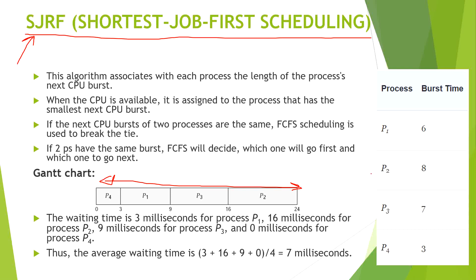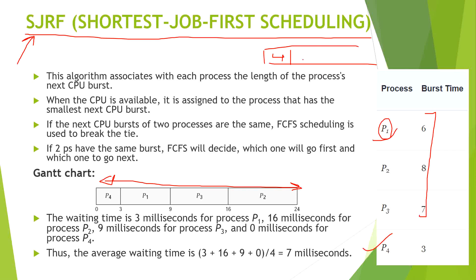So which one is having the lowest burst time? P4. So firstly it will allocate P4. After process 4 completes its execution, we check which is next lowest — that is process 1. So process 1 will be allocated. After that in the third cycle, process 3 will come, and finally process 2.